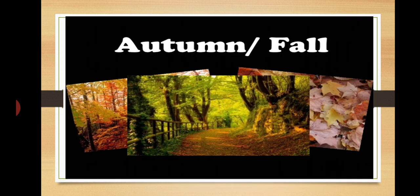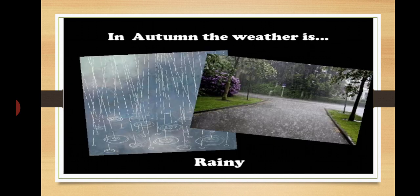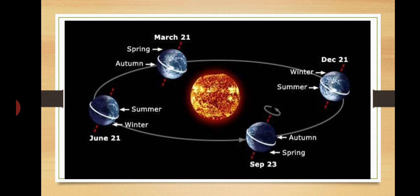These are pictures of autumn — in autumn, the weather is foggy, windy, and rainy. This diagram makes it clear that equinox takes place twice a year: 21st March and 23rd September. Spring equinox spans from 21st March to 21st June in the northern hemisphere; autumn equinox spans from 23rd September to 22nd December in the northern hemisphere.